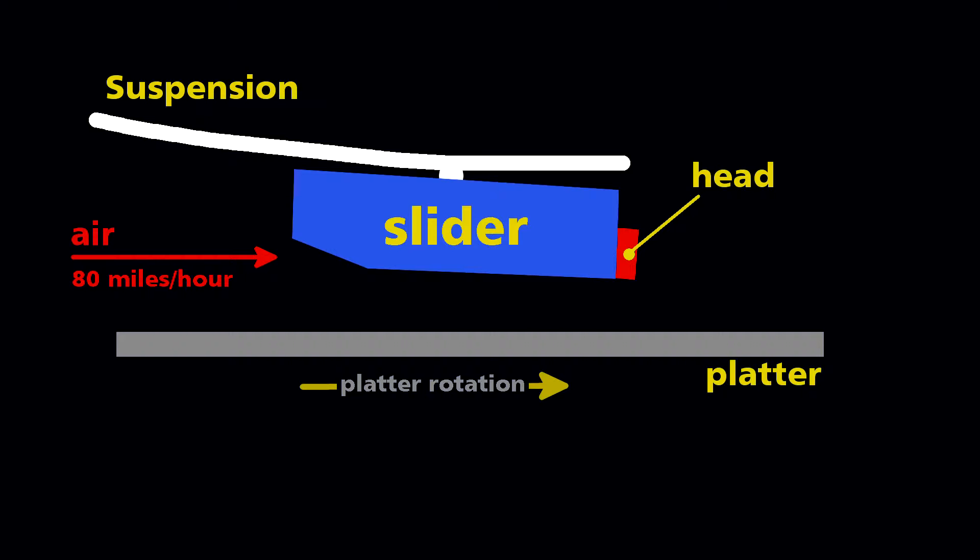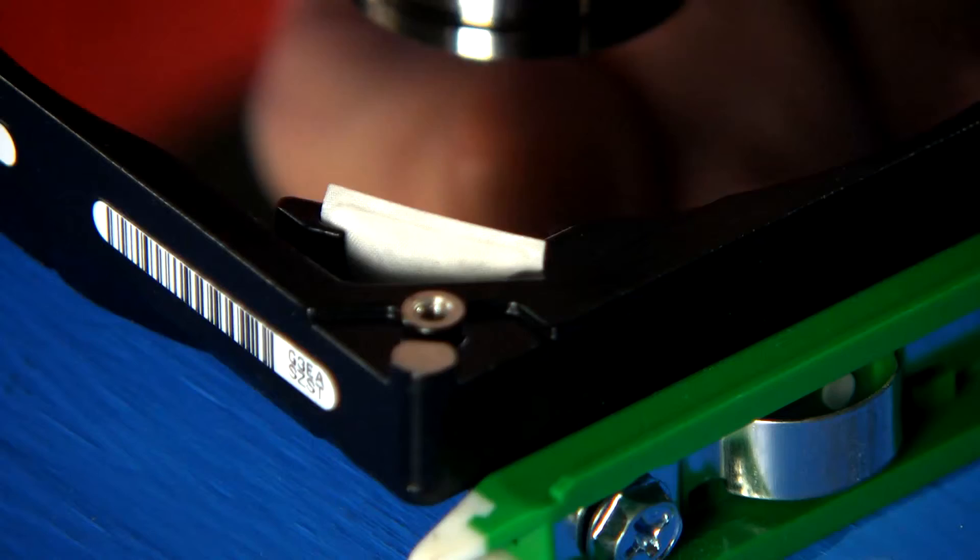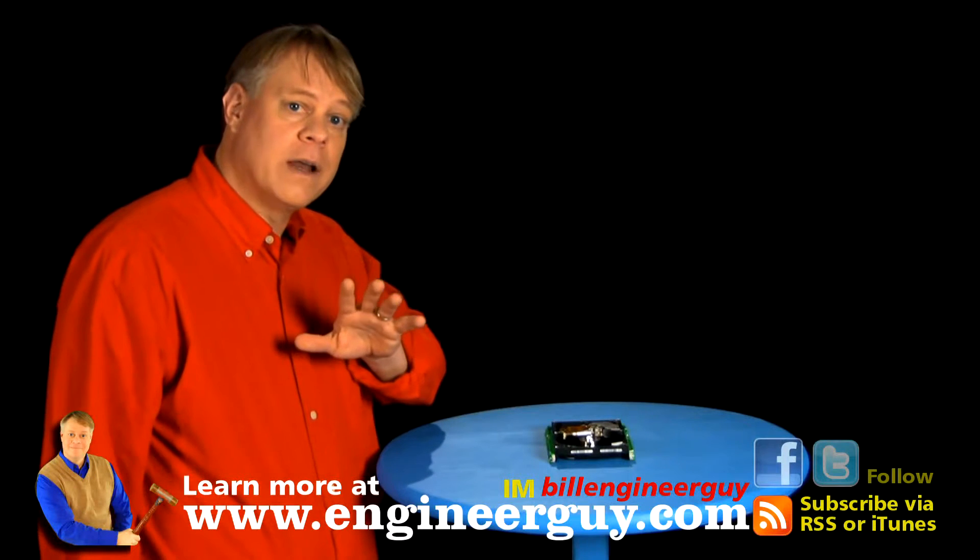If any disturbance causes the slider to rise too high, it floats back to where it should be. Now, because the head is so close to the disk surface, any stray particles could damage the disk, resulting in data loss. So engineers place this recirculating filter in the airflow. It removes small particles scraped off the platter.